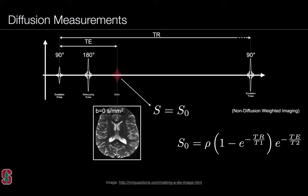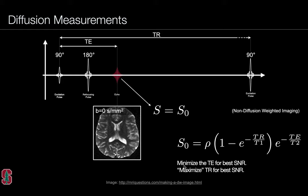To design the experiment for estimating diffusion coefficients, the first step is acquiring the S0 image with a spin echo sequence—proton density-, T1-, and T2-weighted depending on chosen imaging parameters. Typically, TE is minimized for best SNR by packing gradient waveforms as efficiently as possible, and TR is maximized—generally many seconds long—for the best signal-to-noise efficiency.